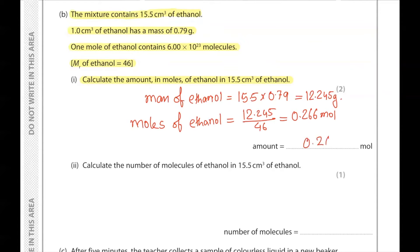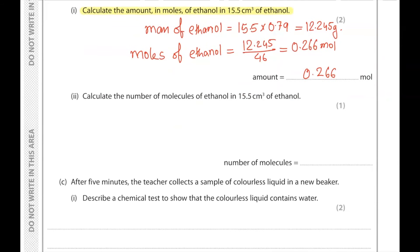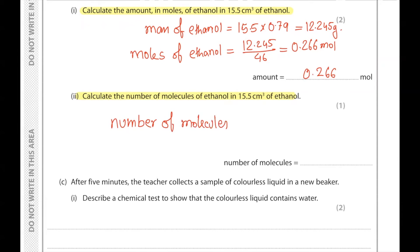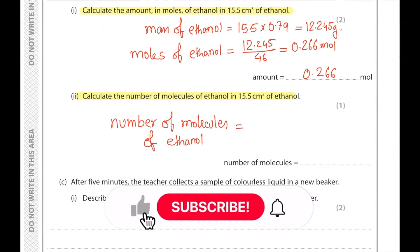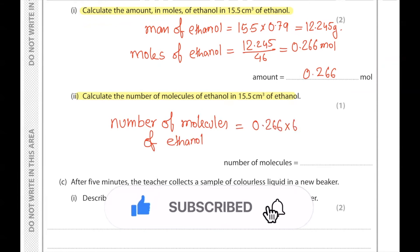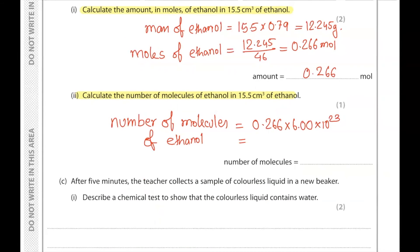Next, calculate the number of molecules of ethanol in 15.5 cm³. Since we know the number of moles, number of molecules = 0.266 × 6.00 × 10²³ = 1.60 × 10²³ molecules.